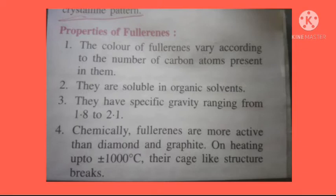Fullerenes are chemically more active than graphite and diamond. One of their uses is that they act as an insulator. So with that, we have completed the three crystalline forms of carbon: graphite, diamond, and fullerene.